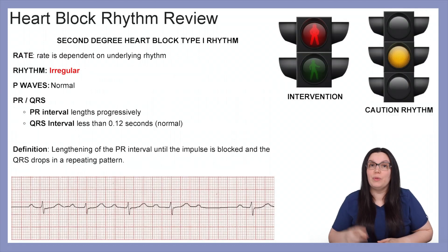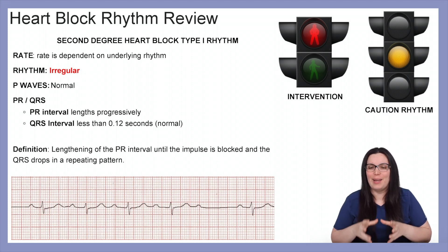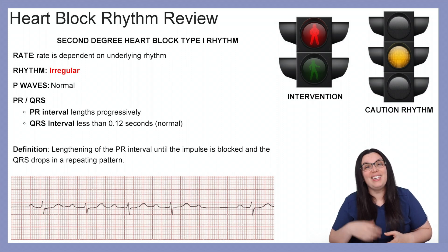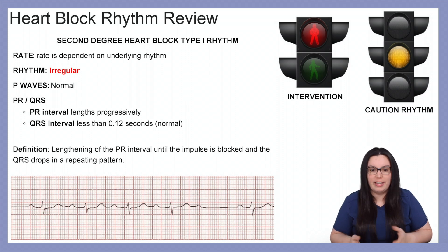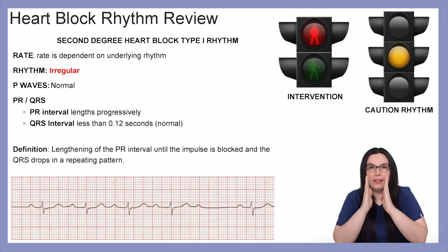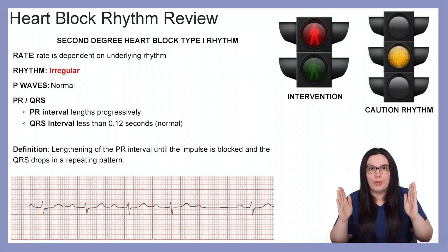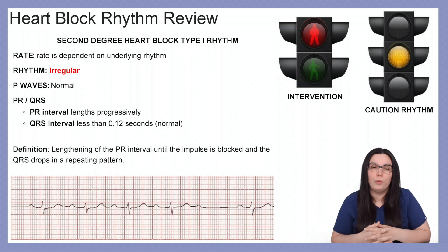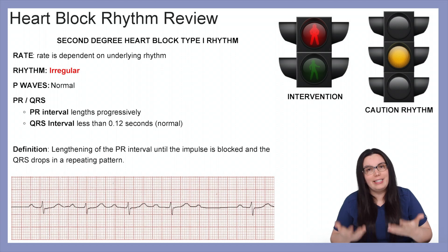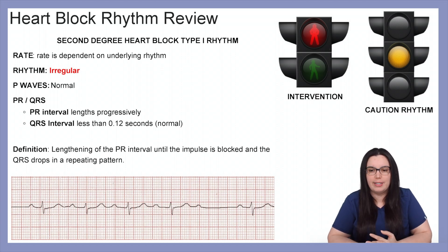Now with our second degree heart blocks, we've got two different types: type 1 and type 2. With second degree type 1, the rate is dependent on the underlying rhythm and the rhythm will be irregular. P waves will be normal and the PR interval lengthens progressively — it's going to lengthen on your second beat, lengthen again on your third beat, until eventually there's a drop in the QRS. The QRS when present will be normal, less than 0.12 seconds. The definition is lengthening of the PR interval until the impulse is blocked and the QRS drops in a repeating pattern.